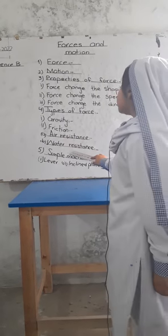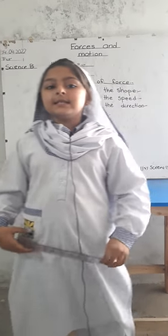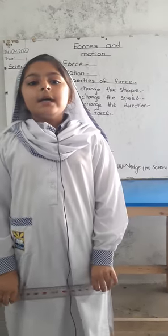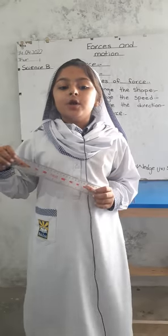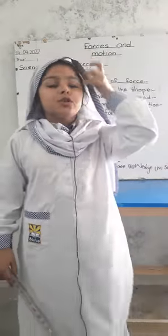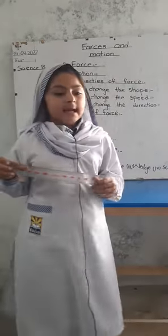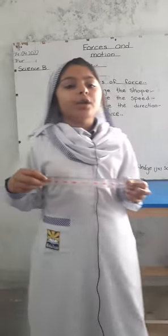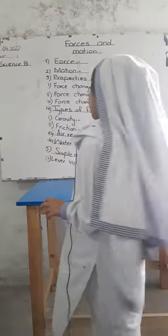Friction is of two types: air resistance and water resistance. Air resistance is a type of friction where the air slows objects down. For example, a parachute works due to air resistance. Water resistance: if we walk in water, it is difficult for us — that is due to water resistance.